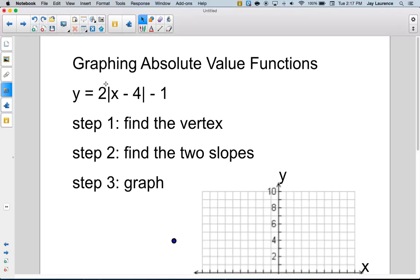So I've got this equation. Y equals 2 times the absolute value of x minus 4 minus 1. Step 1, find the vertex. Well, my vertex is going to be at (4, -1). So that's my vertex.